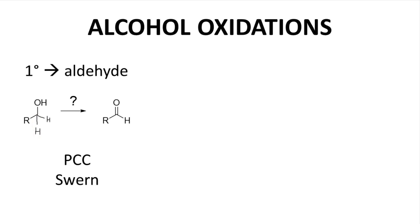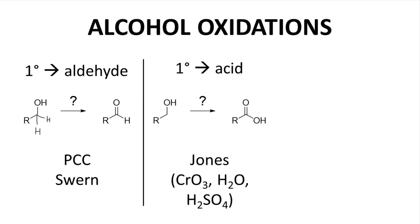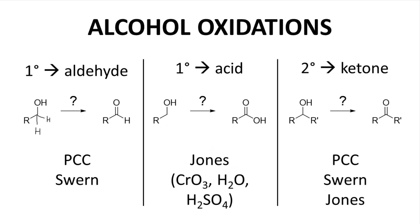Many reagents can perform this reaction. The most common conditions seen in most texts and classes include either PCC (pyridinium chlorochromate) or the Swern oxidation. The Swern involves a cocktail of different reagents, and most people just write 'Swern' over the arrow. The second group for alcohol oxidations again starts with a primary alcohol, but the product is a carboxylic acid. This reaction is actually two oxidations — the alcohol is first converted to the aldehyde, which is then again oxidized to the carboxylic acid. The Jones oxidation, which involves chromium trioxide and acid, performs this oxidation.